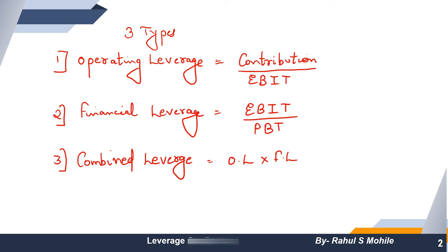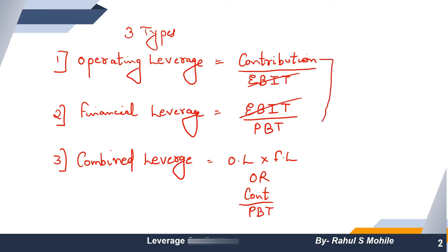For the third type — combined leverage — we multiply the operating leverage with the financial leverage to get the answer. We can also calculate it using another formula: Contribution divided by PBT. This is because in the first formula, EBIT appears in both numerator and denominator and cancels out, giving us Contribution divided by PBT.